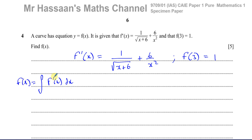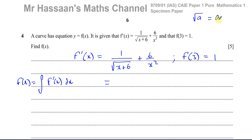f of x is the integral of f'(x) with respect to x, so I'm going to integrate this. Before I do that, I'm going to rewrite it in a form that's easy to integrate — in index form with all the x terms in the numerator. One thing we should understand is that the square root of an expression is the same as that expression raised to the power of a half.